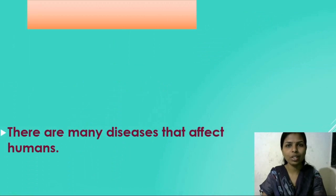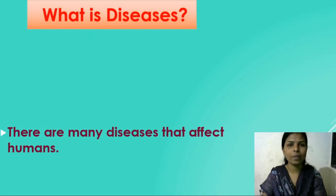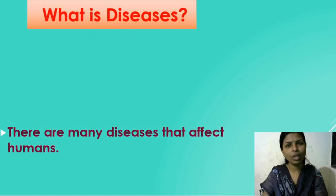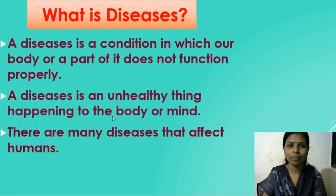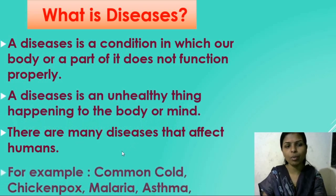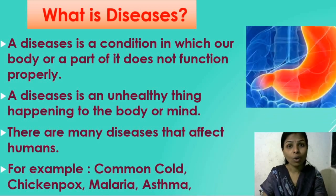Let's move towards the introduction. What is meant by Diseases? When we are sick we don't feel good and we are unable to work properly — that is called a Disease. A Disease is a condition in which our body or a part of it does not function properly, or we can say a Disease is an unhealthy thing happening to the body or mind. There are many different types of Diseases that affect the human body, for example common cold, chickenpox, malaria, asthma, diabetes, and coronavirus.